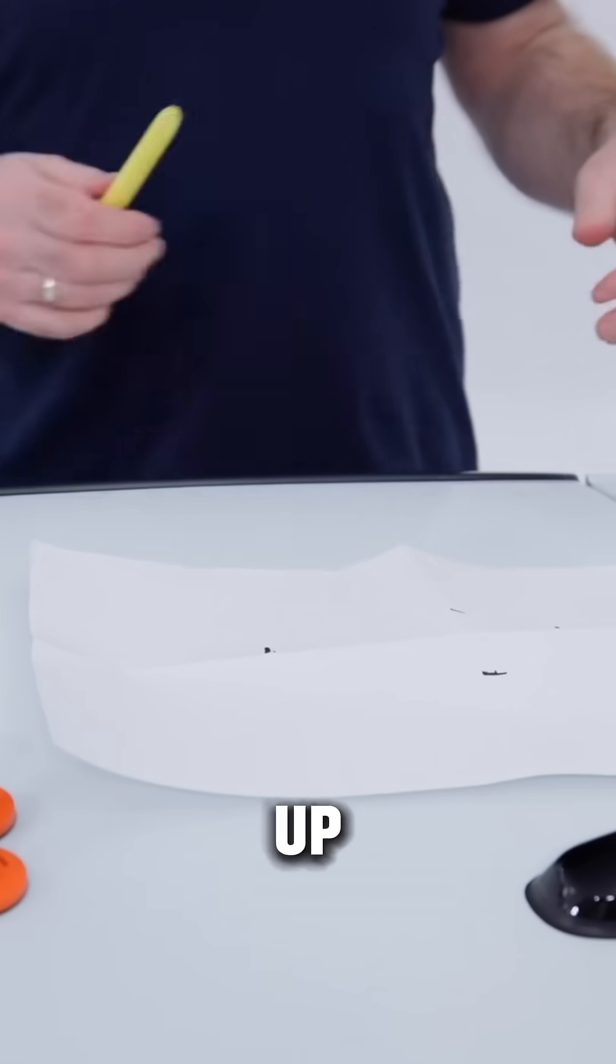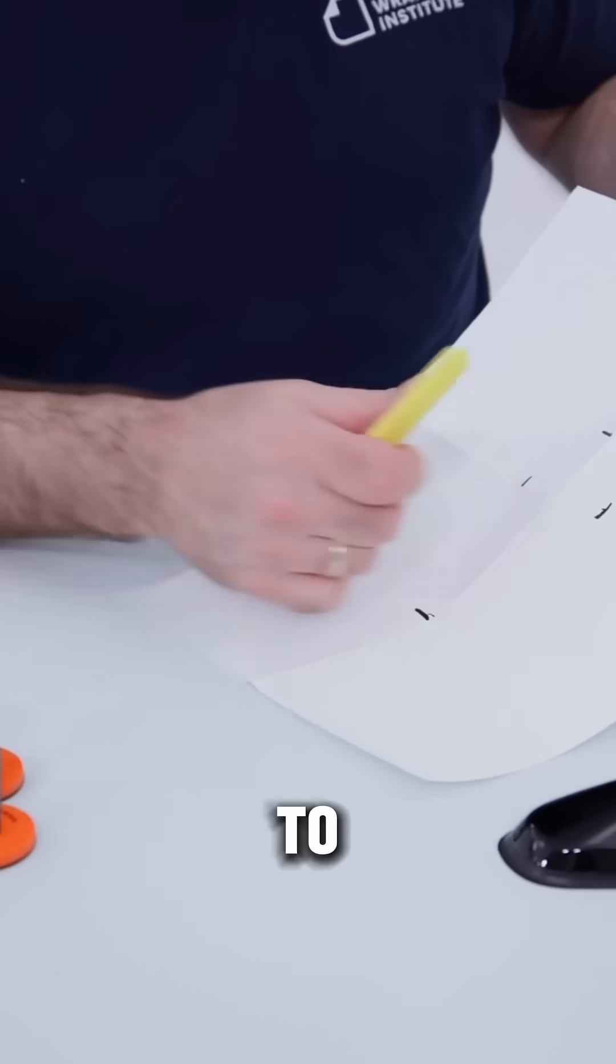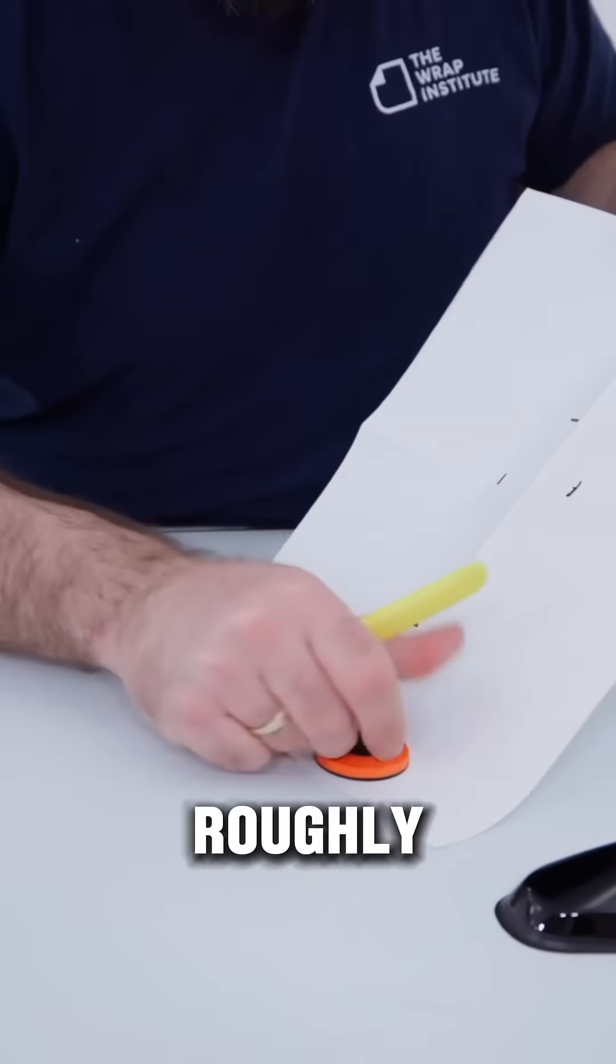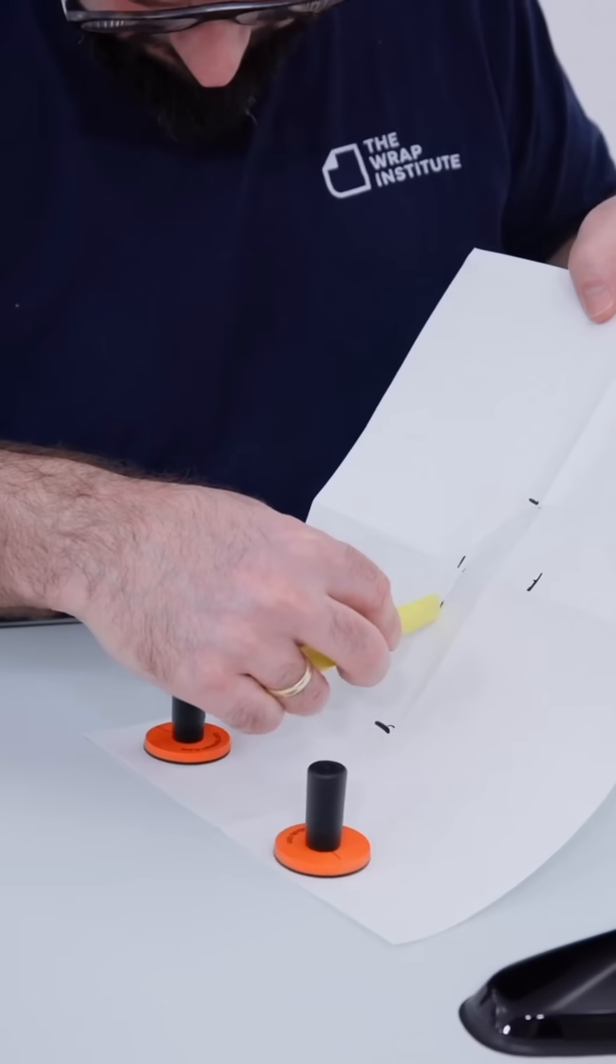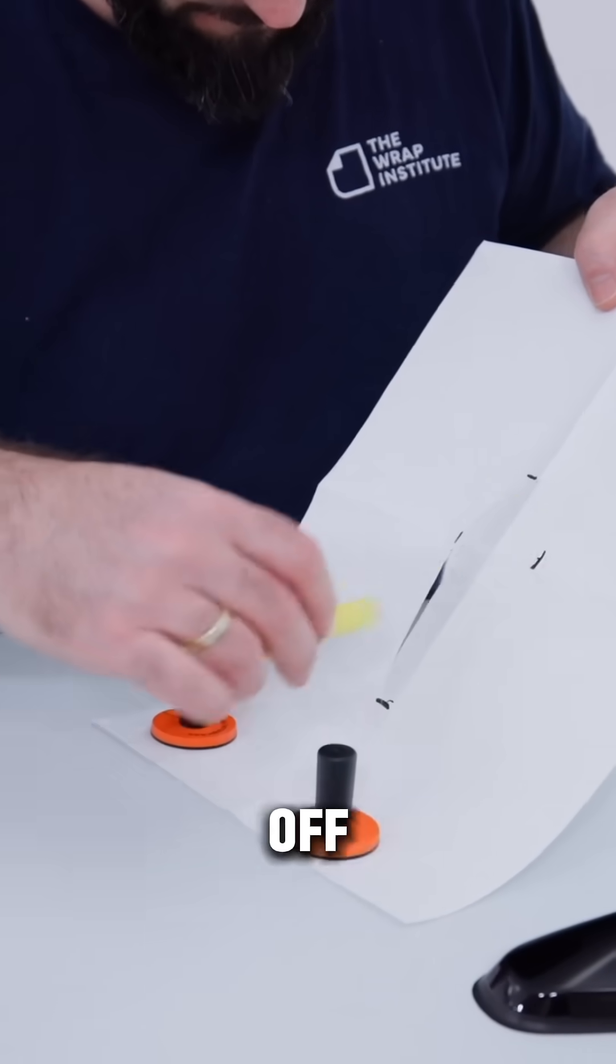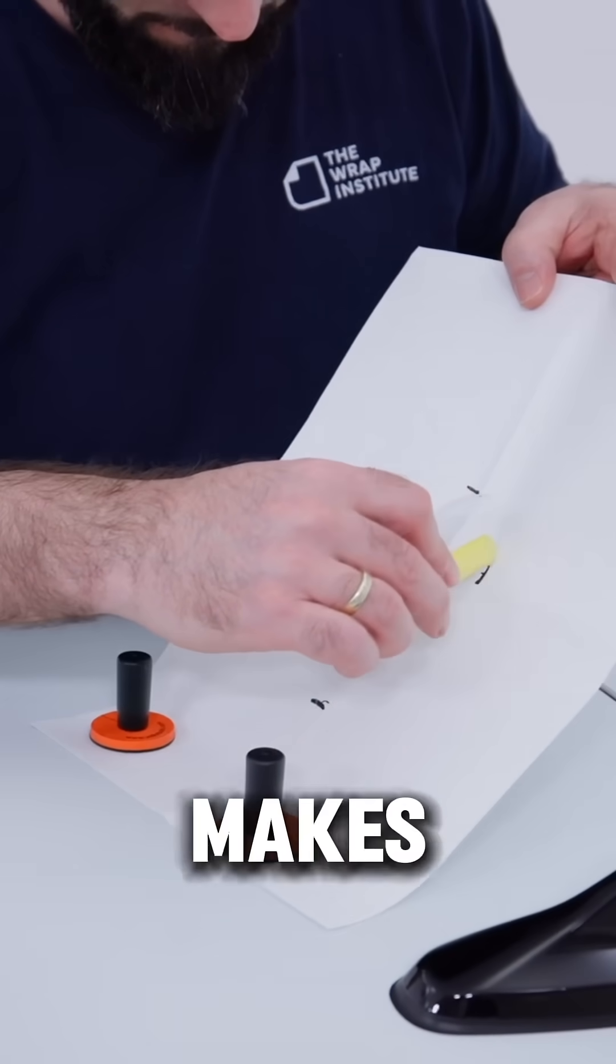So once this is set, he opens up the liner and now he's going to cut out the shape roughly to those marks. So he secures the liner to the roof with magnets. The free hand holds it with tension off the surface. Short shallow blade makes the cuts.